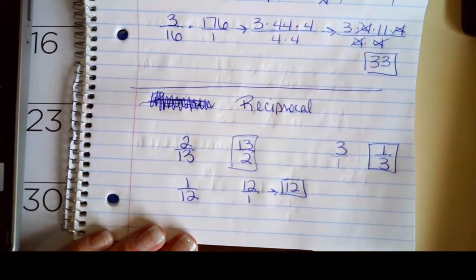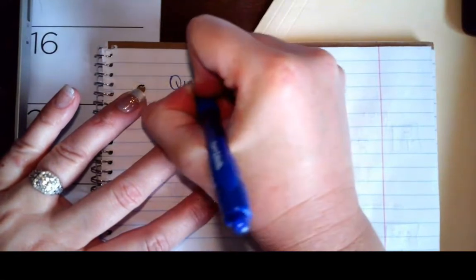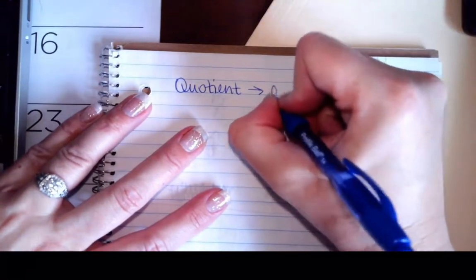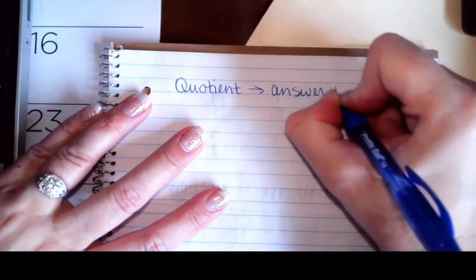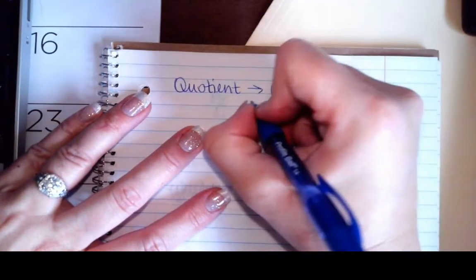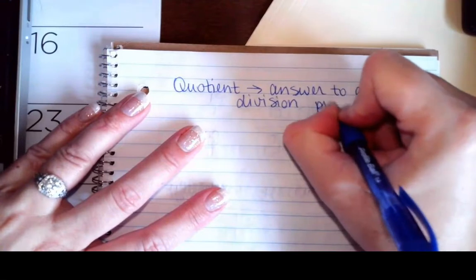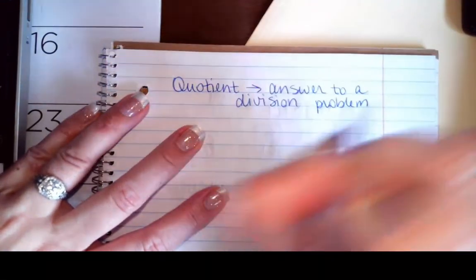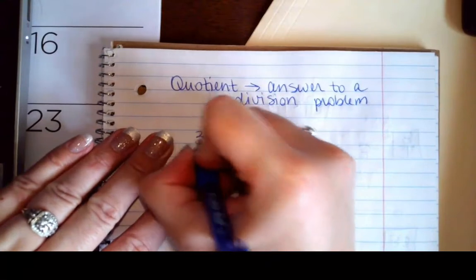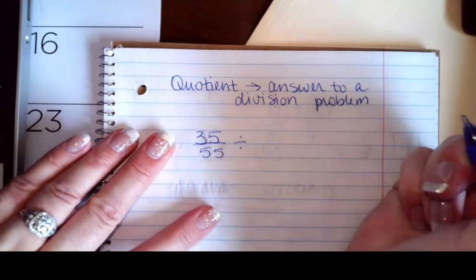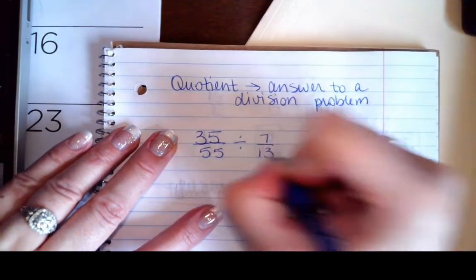So now what we want to do is utilize that knowledge and we are going to use division. So just like the product is the answer to a multiplication problem, the quotient is the answer to a division problem. So if I want to find the quotient, that means please divide. So for instance, I've got 35 over 55 and I'm going to divide that by 7/13.